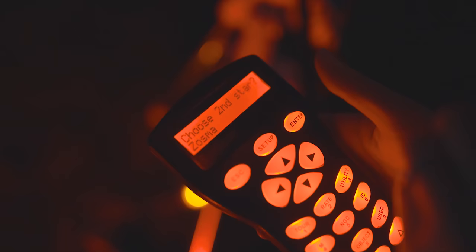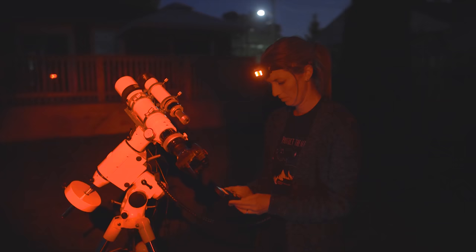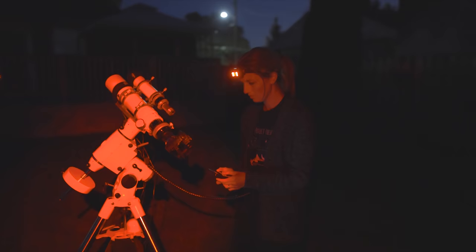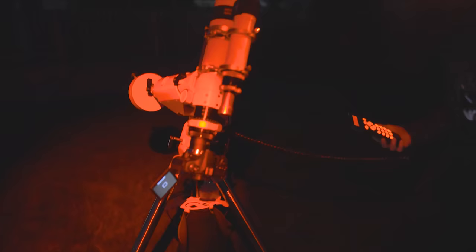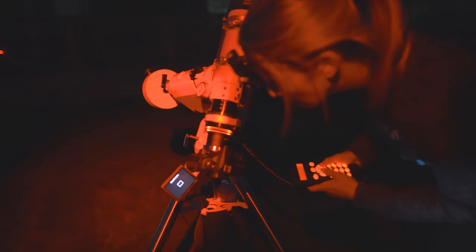Now we need to choose our second star and I think we should choose Arcturus because it's nice and bright. The great thing about your second alignment star is that the telescope mount already has a reference point to go from so chances are it's going to show up right in the field of view. We should see it there on the screen already and we do, look at that. It's almost centered already. Ashley's just going to do some fine tuning and then she's going to hit okay.